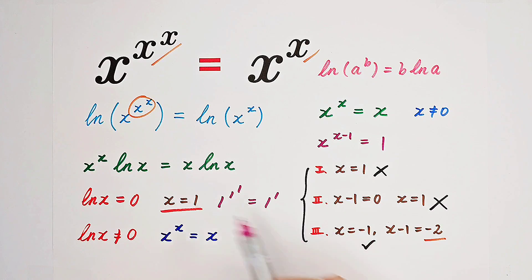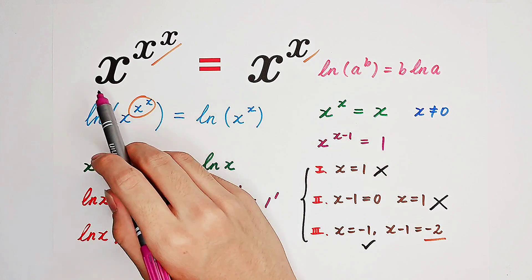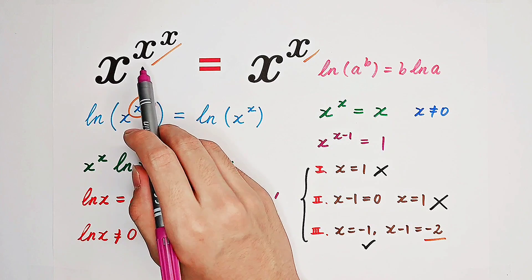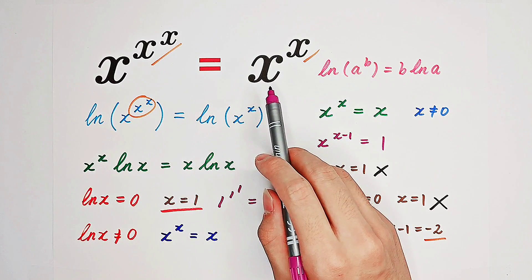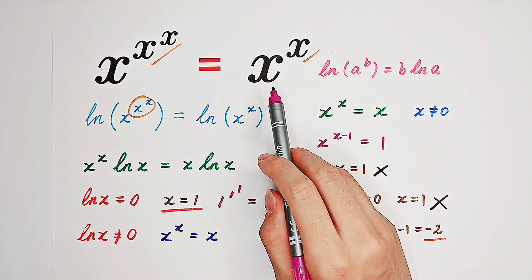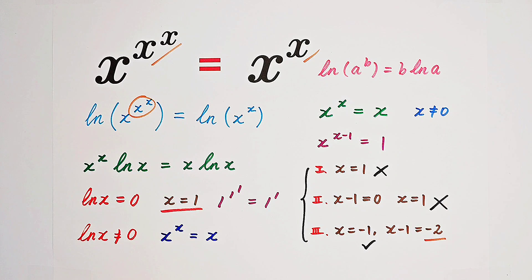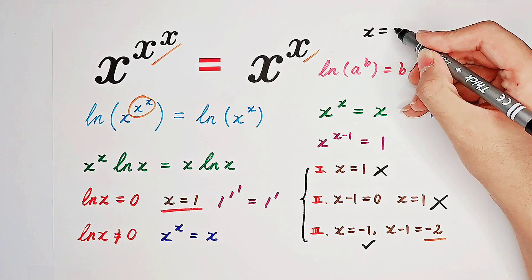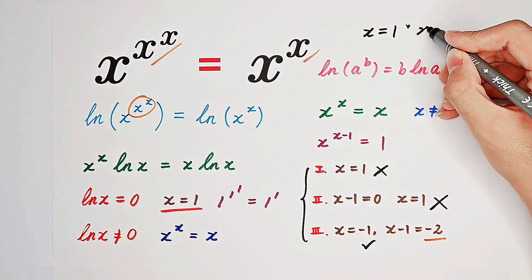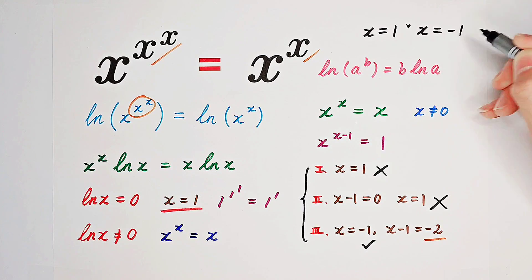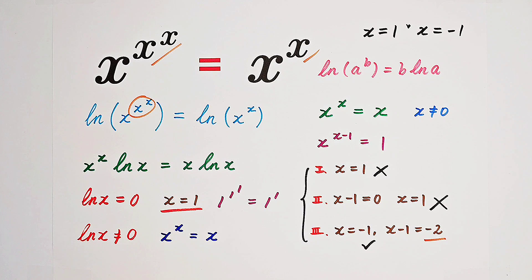If you substitute x equals negative one into the original equation, you get negative one to the power of negative one to the power of negative one equals negative one to the power of negative one. You end up with negative one equals negative one, which is always true. So we've got two solutions: x equals one or x equals negative one. Give me a thumbs up, subscribe for more wonderful questions, and we'll see you next time.